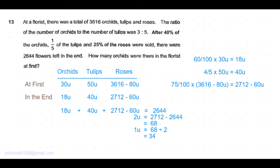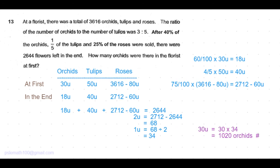The question is, how many orchids were there in the florist at first? Orchids were 30 units. 30 times 34 equals 1020 orchids. So that's the answer to this question.